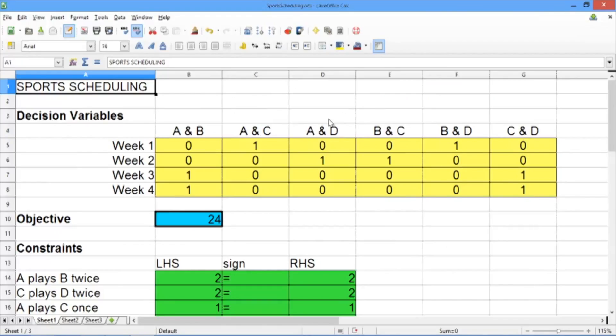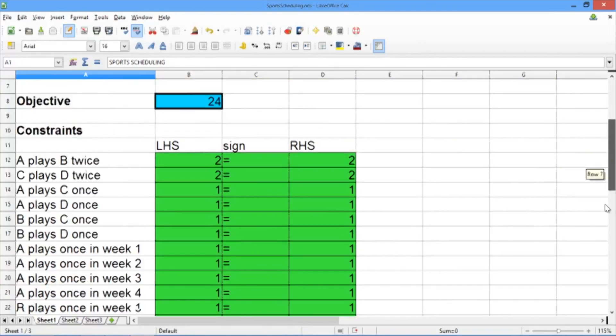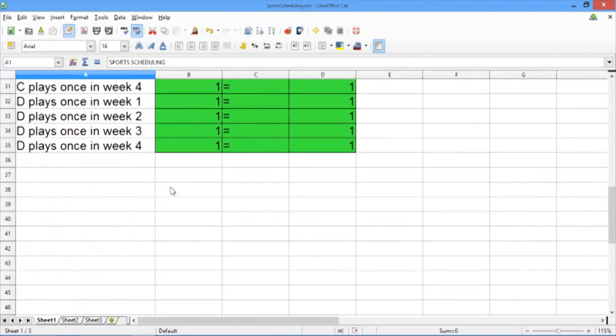In our spreadsheet, let's scroll down to the bottom of our constraints list. We want to add in three new constraints. The first is that teams A and B can't play in both weeks 3 and 4. The second is that if teams A and B play in week 4, then they have to play in week 2. And the third is that teams C and D have to play in weeks 1 and or 2.